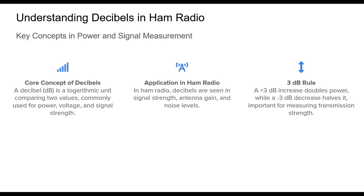At its core, a decibel is a logarithmic unit that compares two values, whether power, voltage, or other quantities. In ham radio, we encounter decibels frequently when discussing signal strength, antenna gain, and noise levels. A critical aspect to remember is the 3 dB rule: increasing by 3 dB doubles the power, while decreasing by 3 dB halves the power. This principle allows us to quantify how much stronger or weaker our signal becomes, making it essential for optimizing communication efficiency.